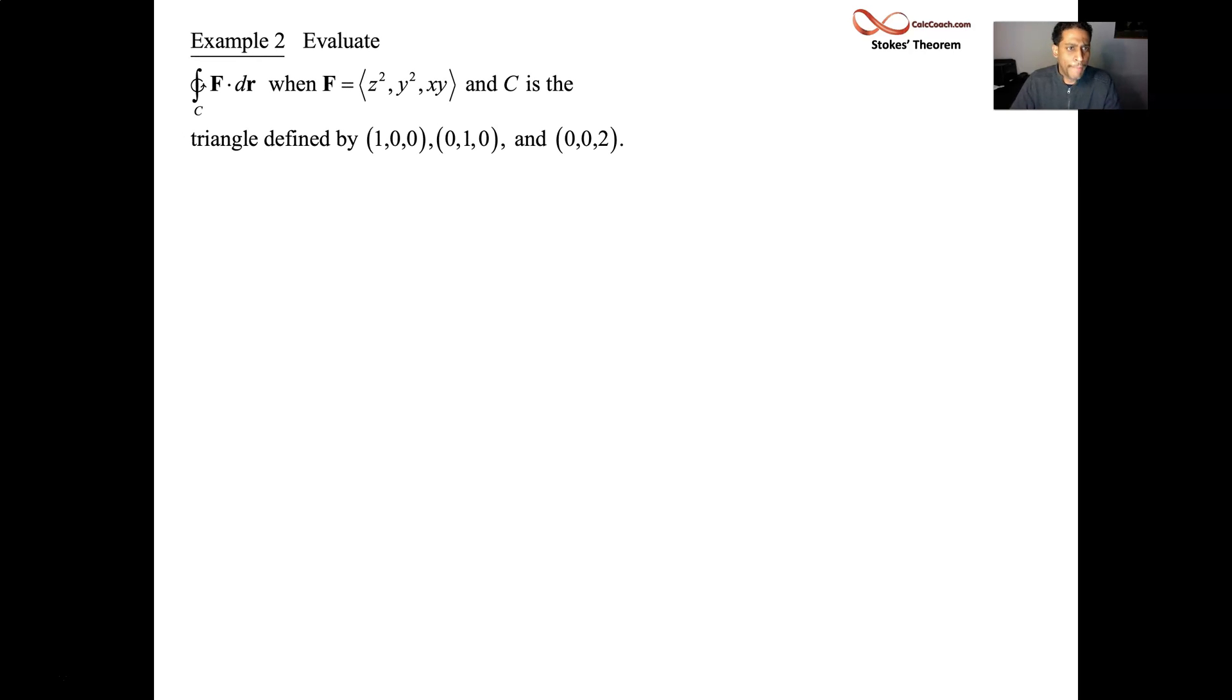We're going to pick a nice surface. So we'll call this example 2. We're asked to evaluate this line integral. We have a vector field, and the curve is the triangle that's formed from 1 on the x and 1 on the y and 2 on the z-axis. So it looks like that. So that's our curve C, oriented counterclockwise.